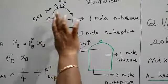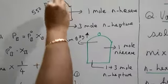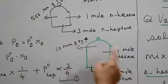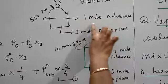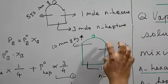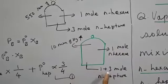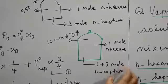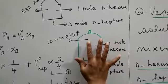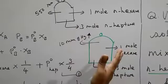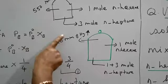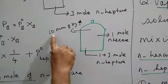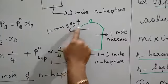Vapor pressure of the solution where you are having 1 mole of n-hexane and 3 moles of n-heptane. Vapor pressure is 550 mm of mercury. To the same container now we are adding n-heptane 1 mole. So now the same container, 1 mole of hexane is there. Now on adding this becomes 1 plus 3 moles.